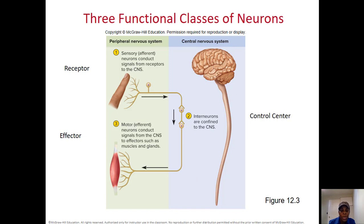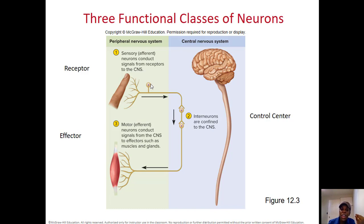This slide shows the three functional classes of neurons. On your finger you have receptors, which are just dendrites of neurons receiving information going to the central nervous system. In the CNS the message is integrated and a response is given so the motor neuron can carry the command. You can see the sensory neuron is structurally unipolar, while the interneuron and motor neuron are multipolar. So unipolar neurons receive, and multipolar neurons can be interneurons or motor neurons.